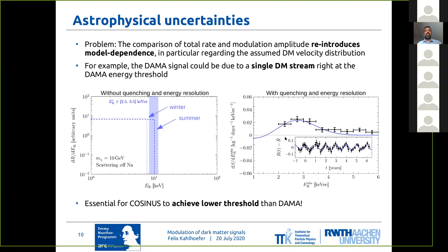So this is at least logically a possibility. It's clear from this argument that the first thing you need to do if you want to compare total rate and modulation amplitude is to make sure you wouldn't miss such features — you need to achieve a threshold which is lower, potentially significantly lower than DAMA. Fortunately, this is something that COSINUS in particular can do due to this cryogenic technology.